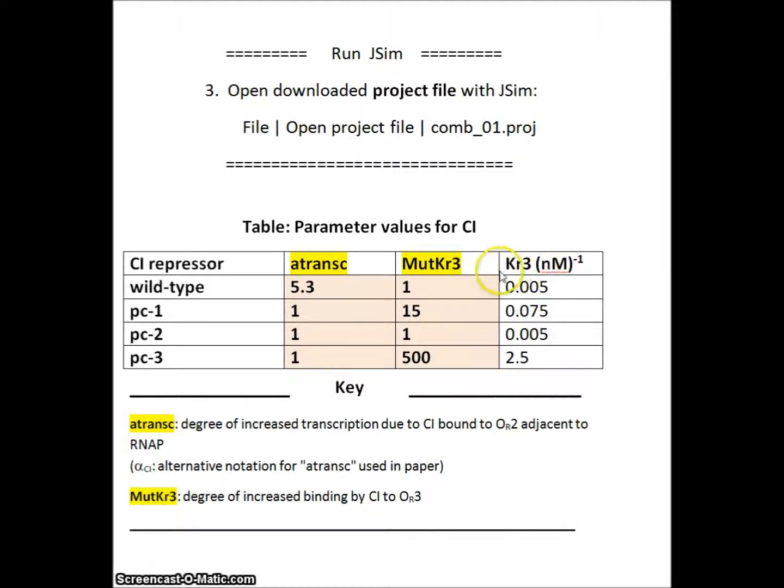Alternatively, they may have increased binding to promoter OR3. The degree of increase for PC1 is 15 times 0.005 to take it to 0.075 nanomolars to the minus one. PC3 in particular binds very tightly to OR3 and dramatically decreases transcription.